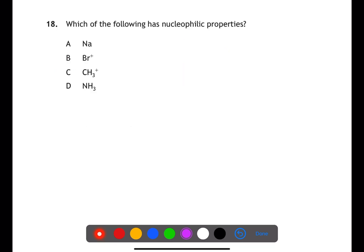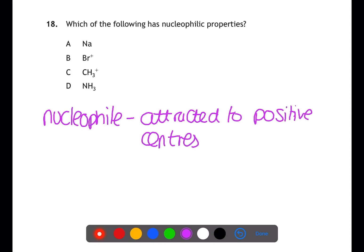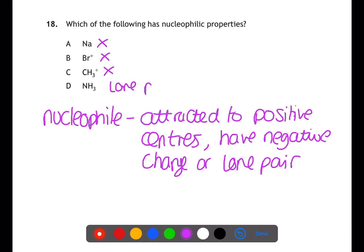For question 18, we need to know the definition of a nucleophile. A nucleophile is attracted to regions of positive charge. It will have either a negative charge or a lone pair. Looking at the answers, we have sodium, which has neither a negative charge nor a lone pair. We have B and C, which both have positive charges, and then D, which is ammonia. The nitrogen has a lone pair on the N, which will make it a nucleophile.